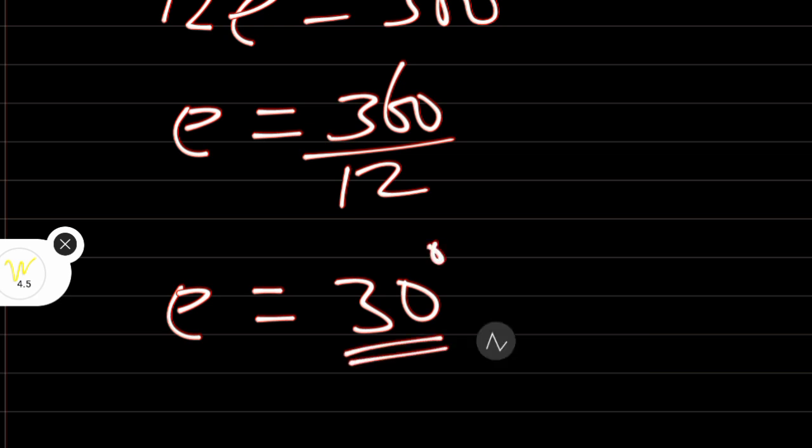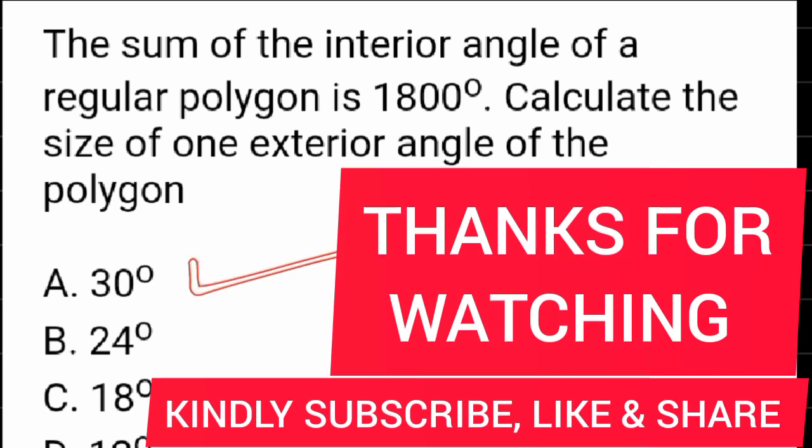Therefore, each of the exterior angles of the polygon will be 30 degrees. Let's project the options. Option A is the correct answer.